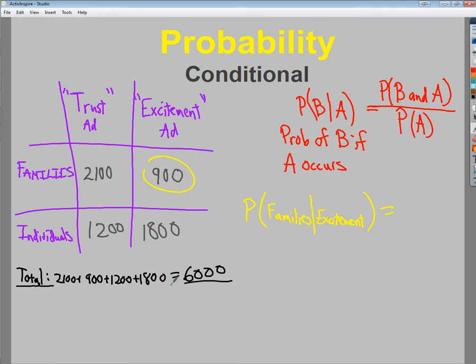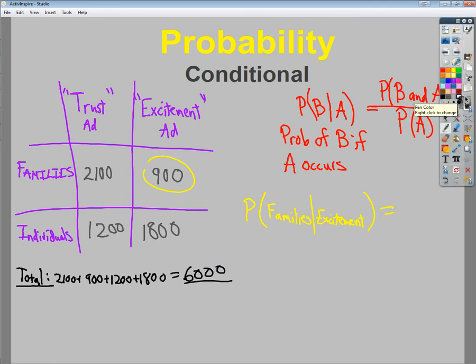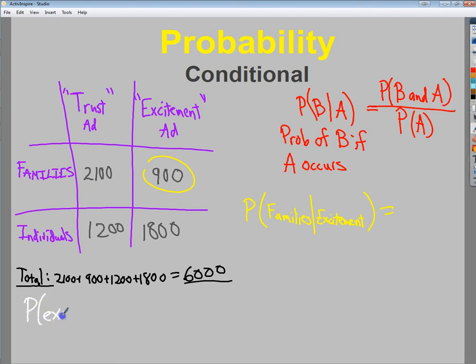So now I want to look at what's the probability of someone choosing the excitement ad? I need to just add up the total number. I mean, what's the probability of somebody choosing the excitement ad in general? Well, you have 6,000 total choices. And of the ones that choose the excitement, I'll do the 900 plus 1,800. Which should be somewhere in the range of about 2,700. So 2,700 over 6,000.